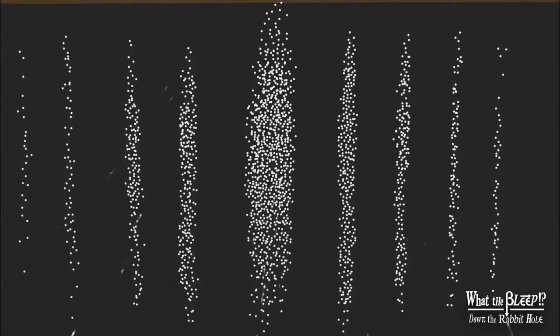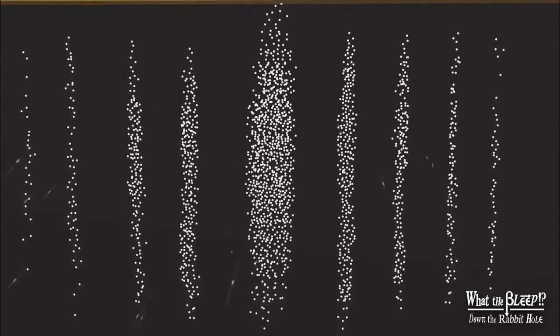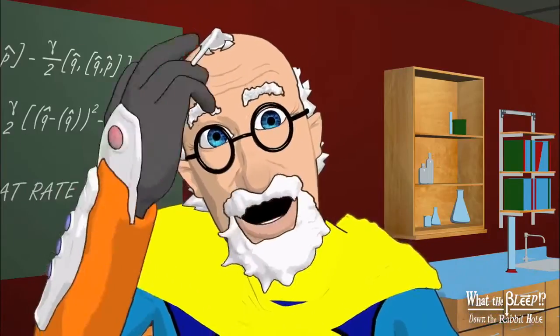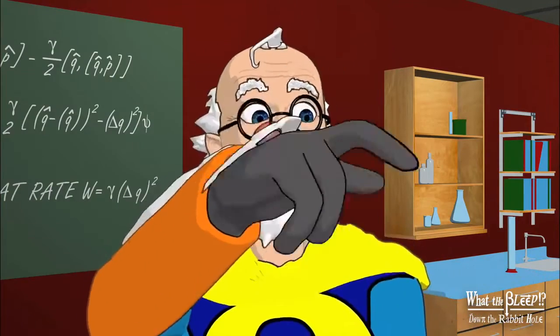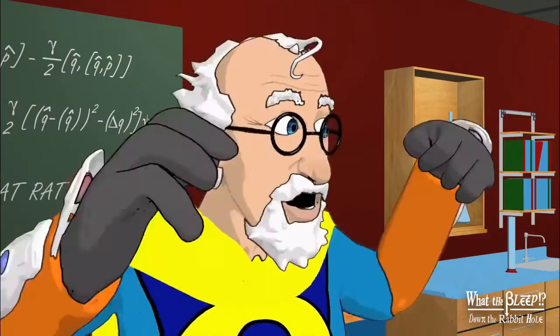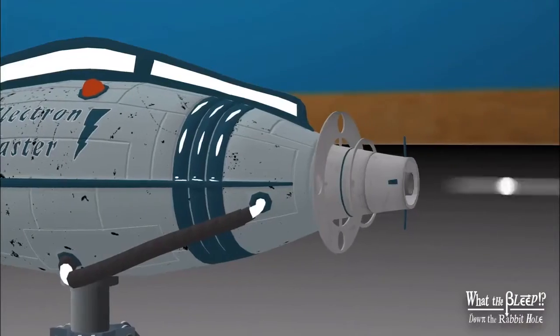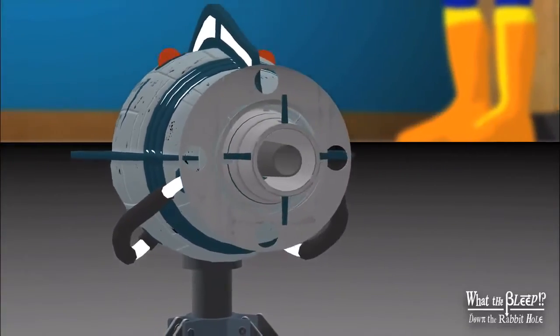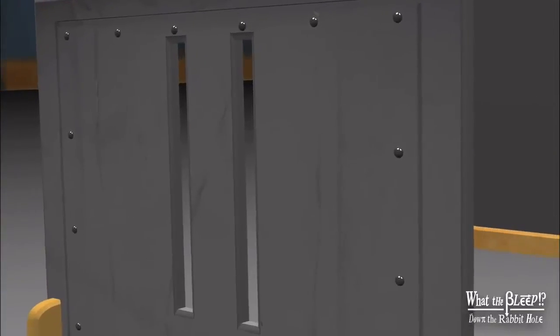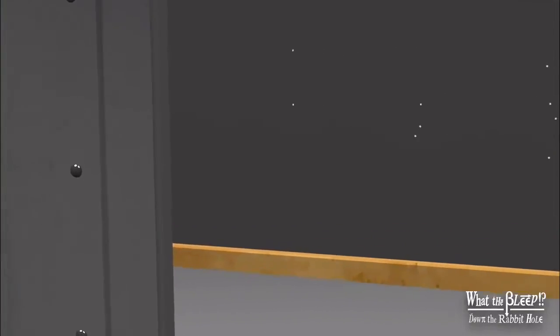It doesn't make sense. But physicists are clever. They thought maybe those little balls are bouncing off each other and creating that pattern. So they decide to shoot electrons through one at a time. There is no way they could interfere with each other. But after an hour of this, the same interference pattern is seen to emerge.